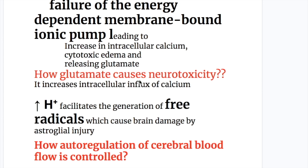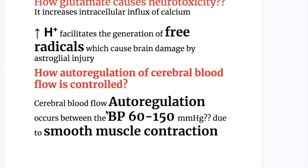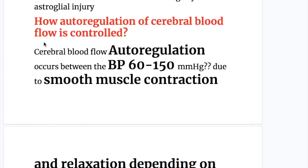Glutamate causes neurotoxicity by increasing intracellular influx of calcium. Increased hydrogen ion concentration facilitates the generation of free radicals, which cause brain damage and damage by astroglial injury.